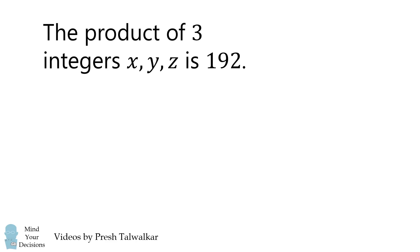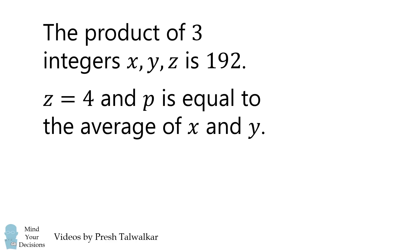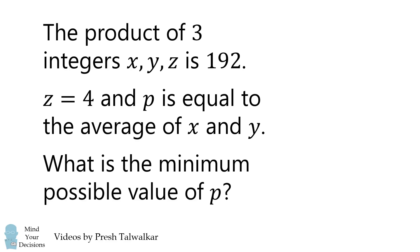The product of three integers X, Y, and Z is 192. Z is equal to 4 and P is equal to the average of X and Y. What is the minimum possible value of P?